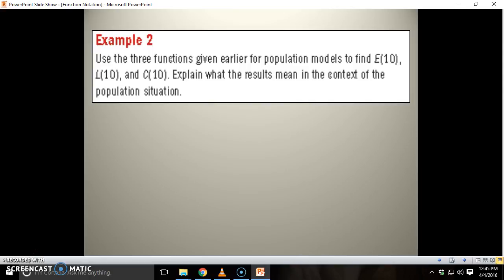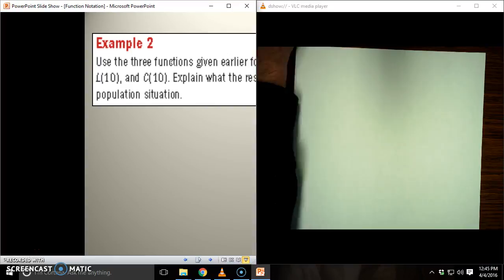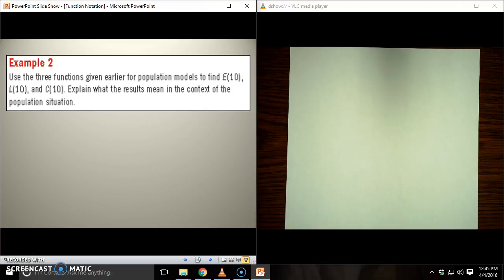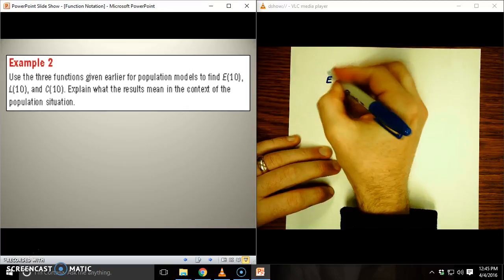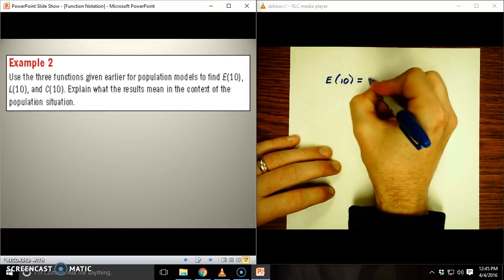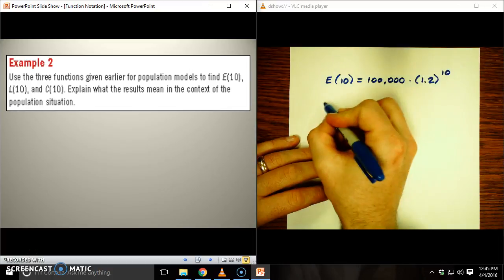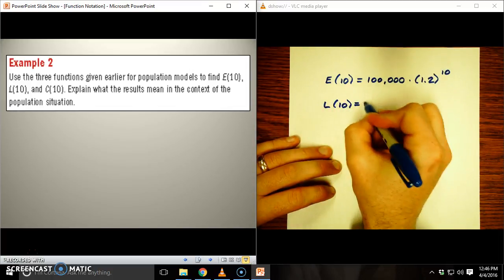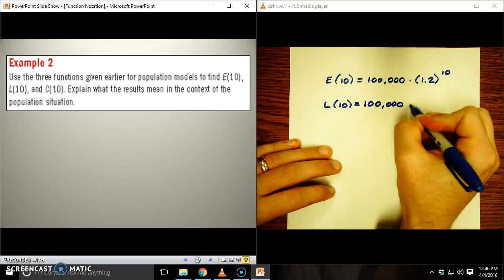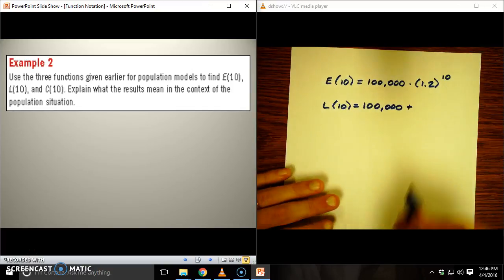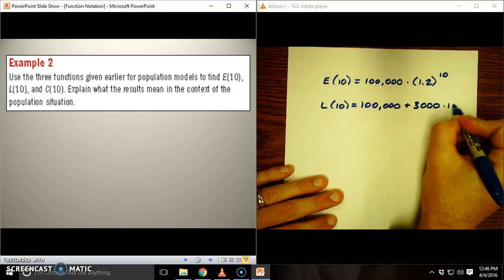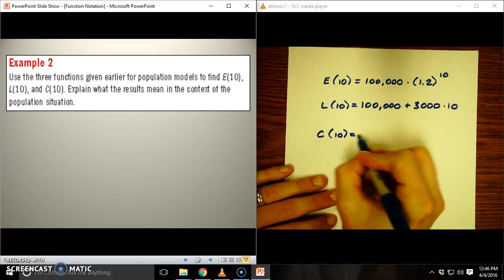Use the three functions given earlier for population model to find E(10), L(10), and C(10), and explain what the results mean in the context of the population situation. So what I'm going to do here is show you the three different scenarios. So if I want E(10), that's going to equal 100,000 times 1.02 to the 10th power. If I want L(10), I have to do 100,000 plus 3,000 times 10. And C(10), well, it's 100,000.